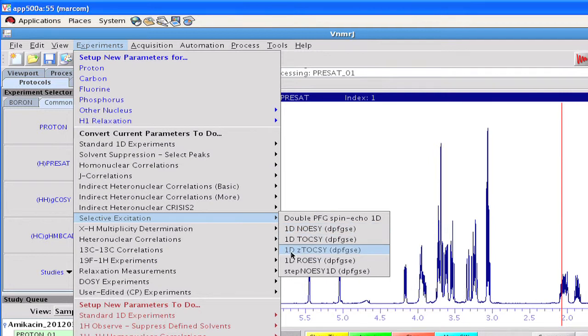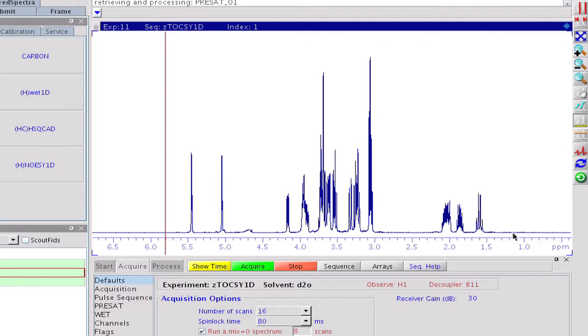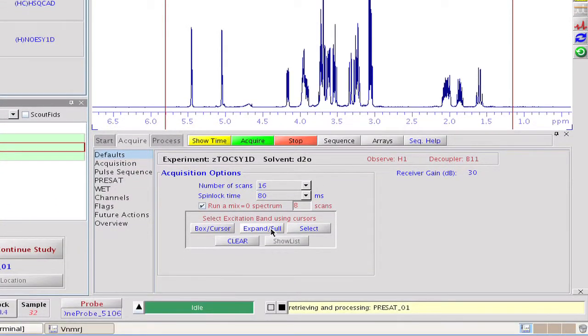By doing so, we import all sequence-specific parameters while keeping all the others that have been optimized on the pre-sat spectrum. The spectral window, for example, or the pre-saturation conditions, just to mention a few.